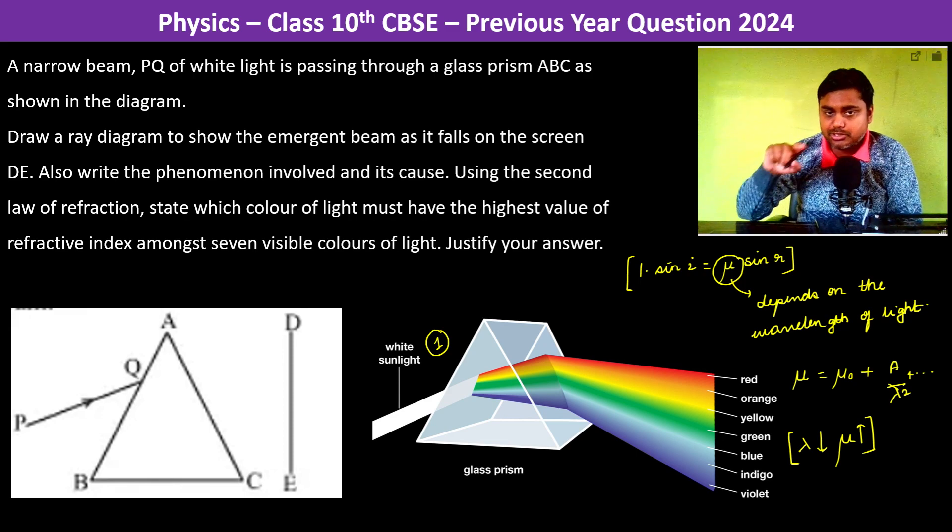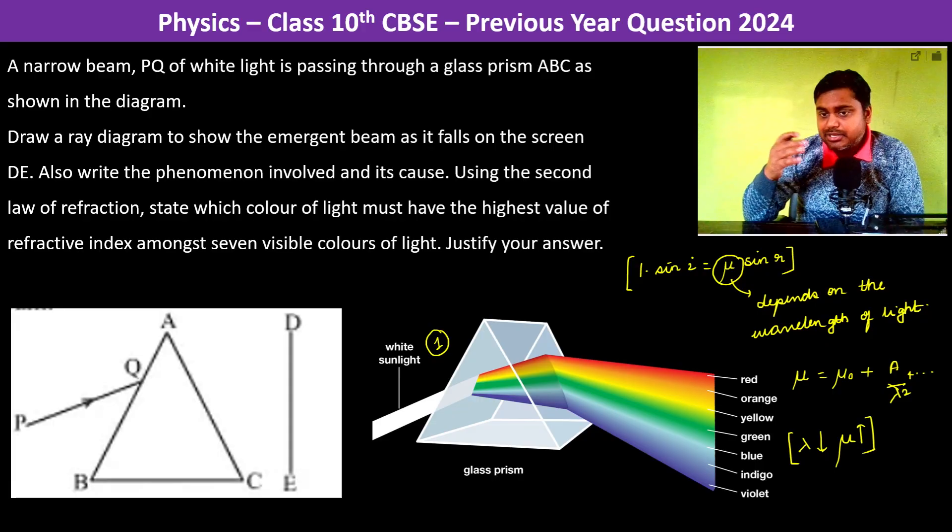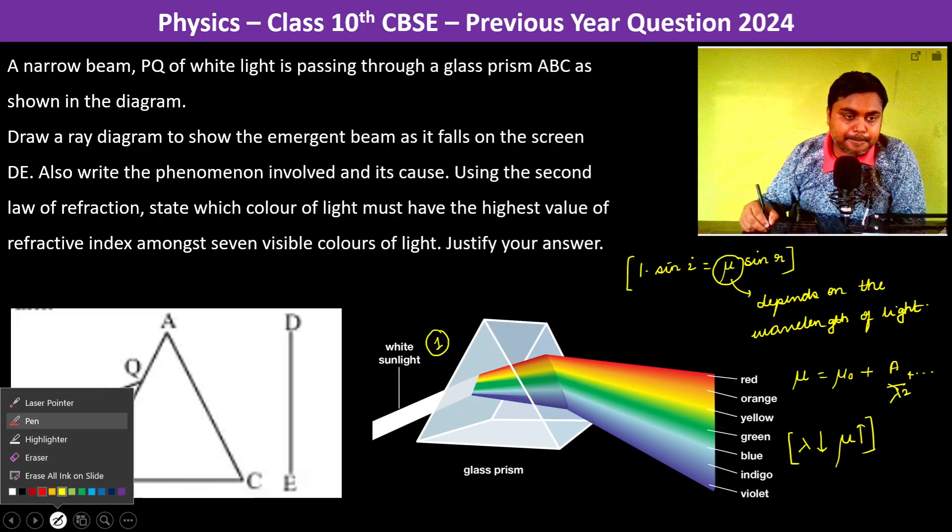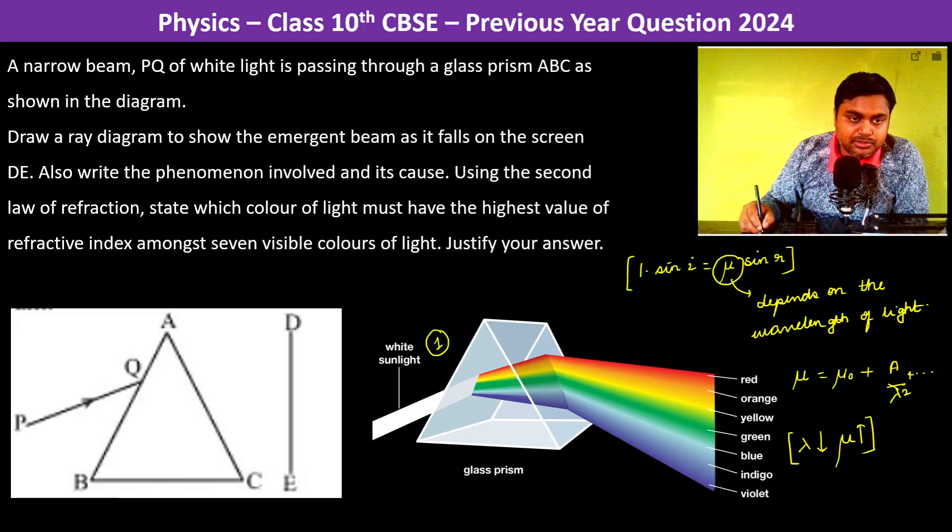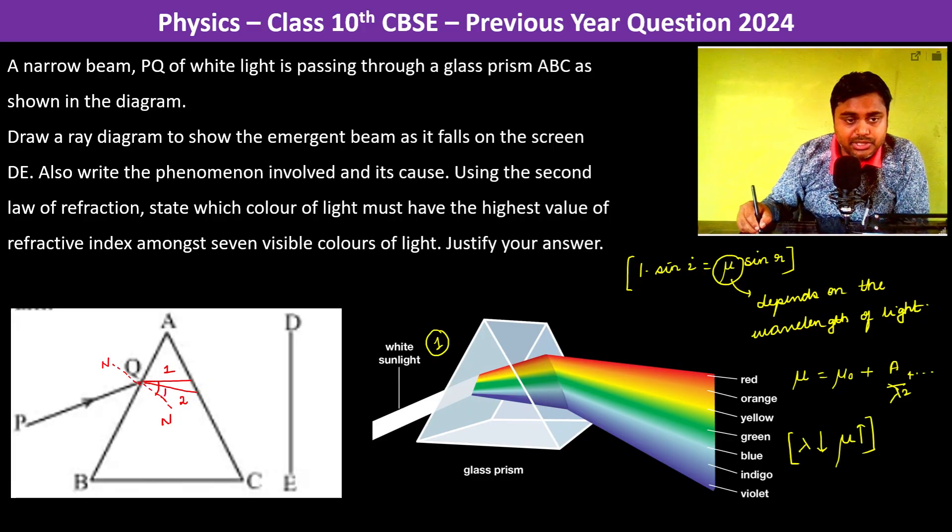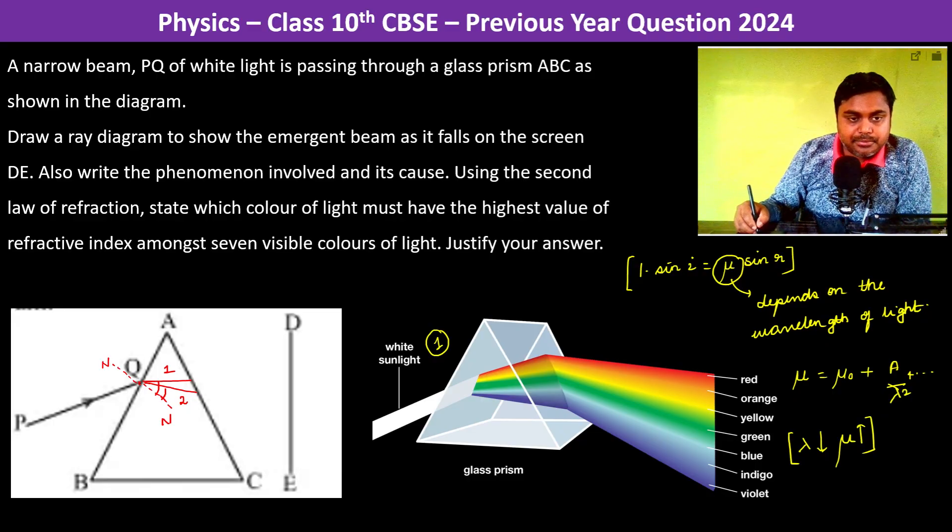But we do not have to justify it using Cauchy's theorem. We have to justify here by seeing the diagram. So now if you see, here we draw the normal. Now we are taking two rays. For ray 1 and for ray 2, this is the normal. So now if you see for ray 1, the angle is more.